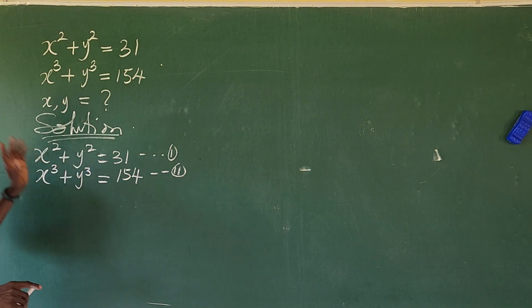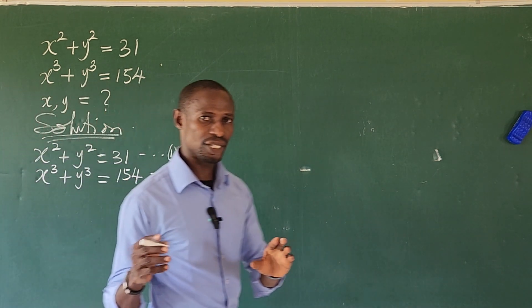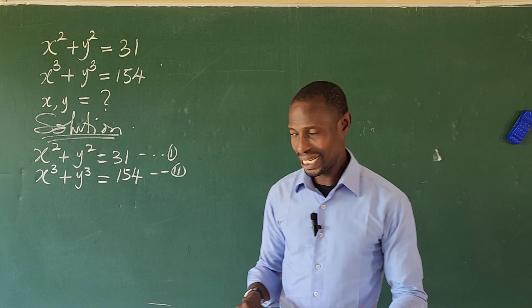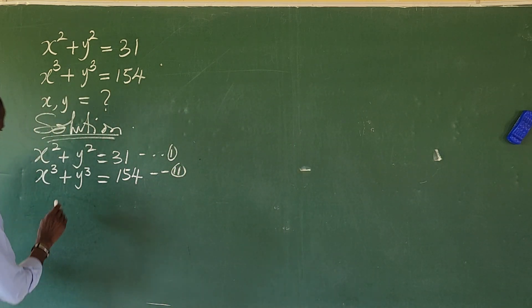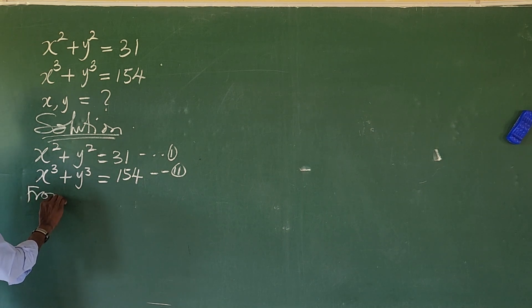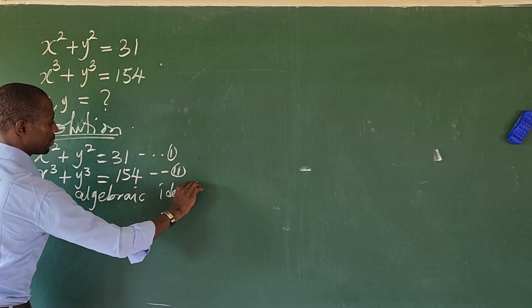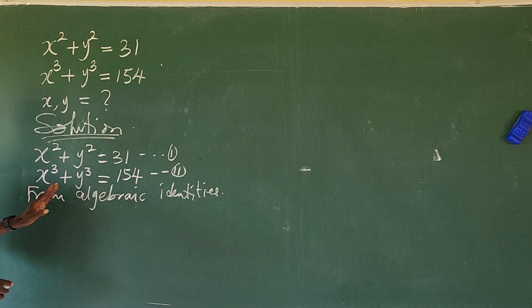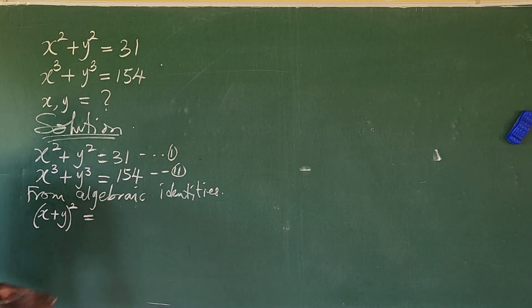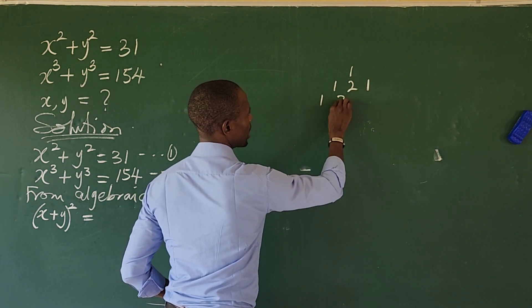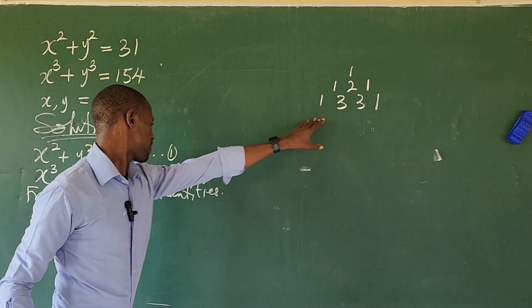From this set of equations, what comes to mind is to think of some algebraic identities. Recall from algebraic identities: if we have (X + Y)² and expand using Pascal's triangle — with coefficients 1, 2, 1 — we get X² plus 2XY plus Y².